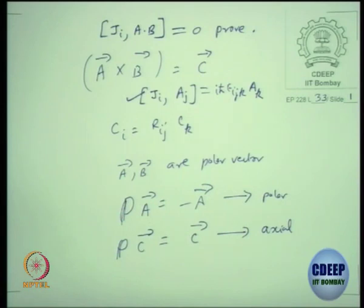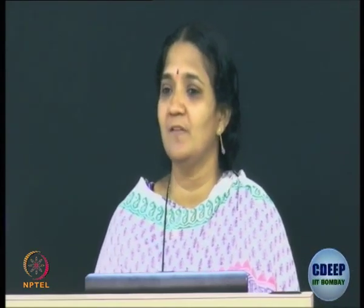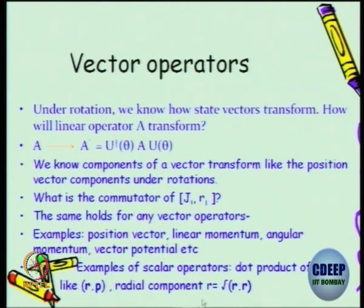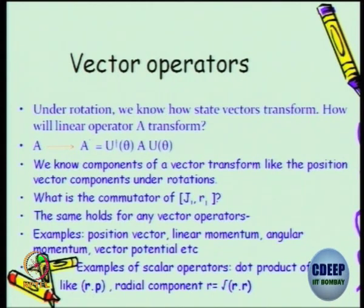R dot P is a scalar, so R dot P has to commute with J. You can also do R dot B or R cross P. I am asking you to work out how any vector operator transforms with respect to angular momentum, and use that to show why A dot B commutes with J. It is not obvious, but you can use the algebra of the epsilon symbol to show this. Scalar product examples are: the radial component which is the square root of R dot R, R dot P, A dot P, A dot B — all kinds of dot products are scalars.